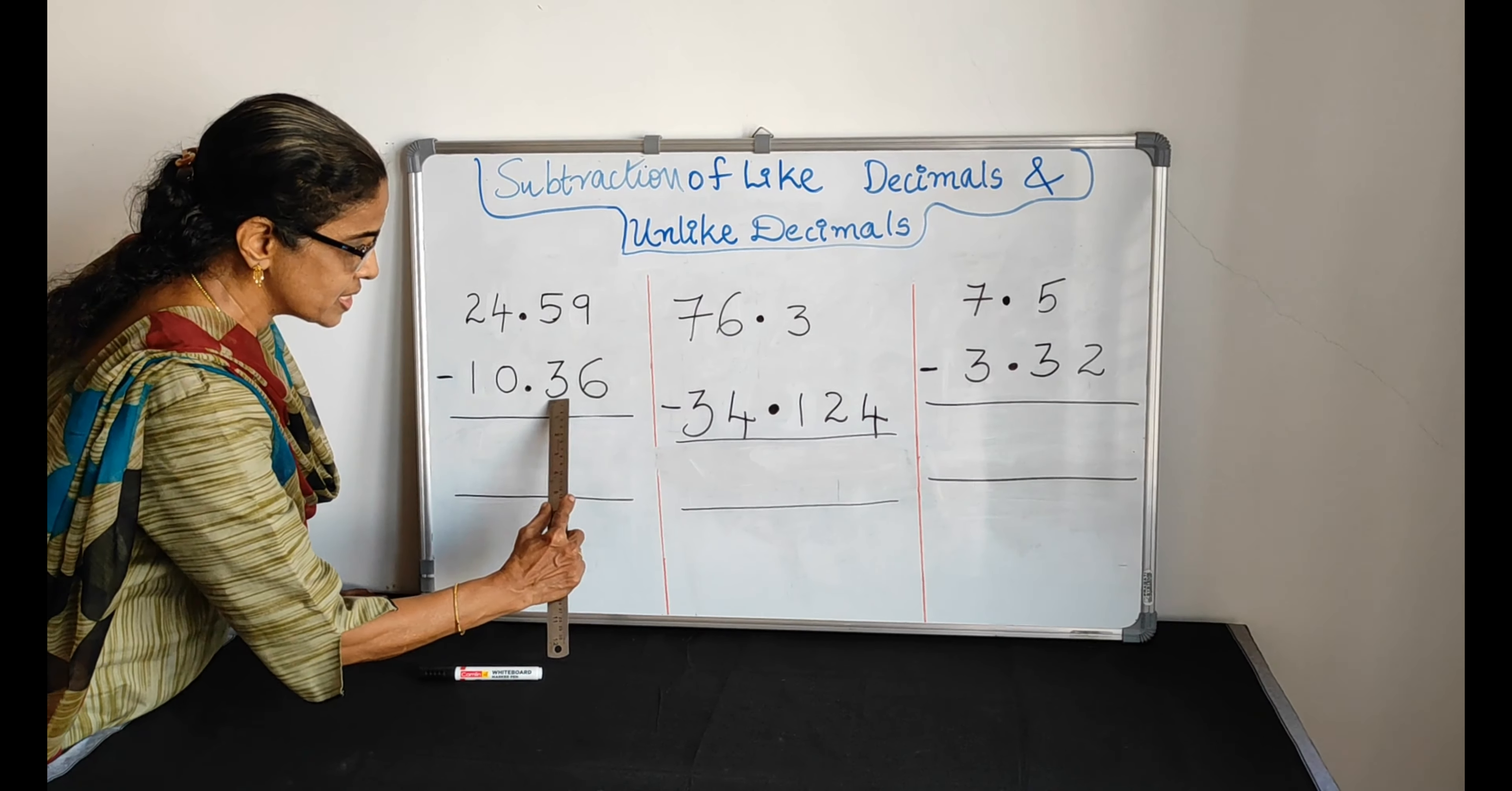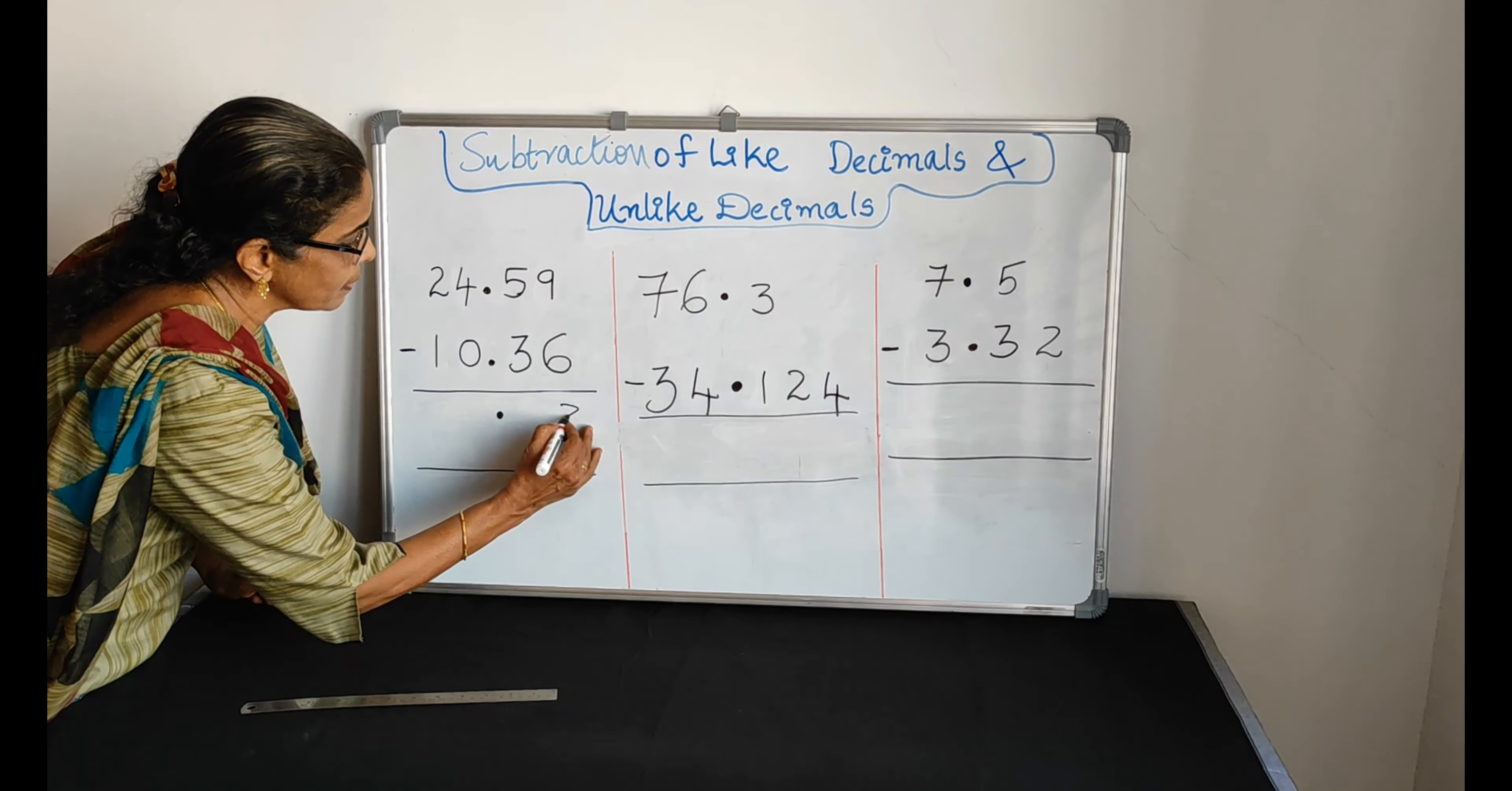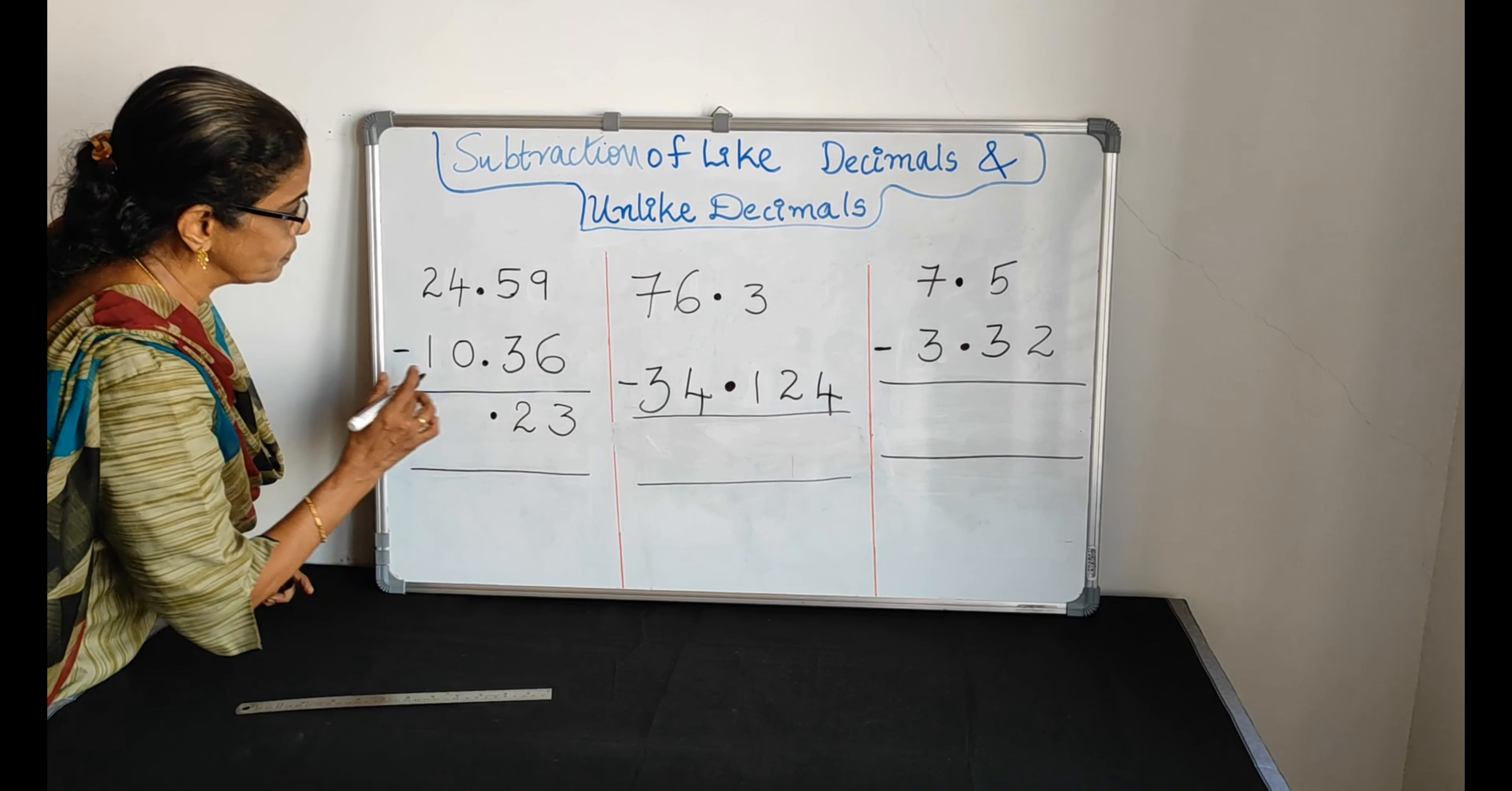First we have like decimals. We have 24.59 minus 10.36. We have 2 digits after the decimal dot. Here also we have 2 digits after the decimal dot. So they are like decimals.